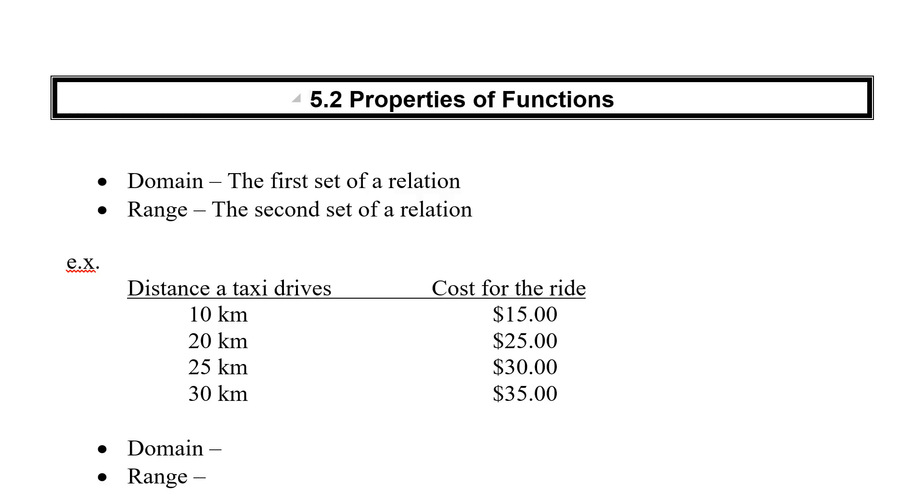We want to start picking up some terms. First one is our domain. The domain is the first set of a relation. The range is our second set. So if I give you an ordered pair, I could ask you for the domain or the range - the first number or the second number.